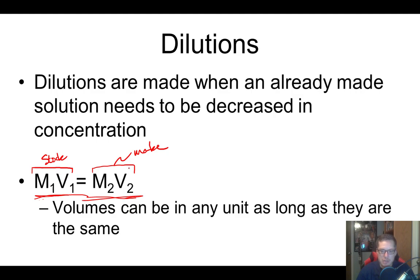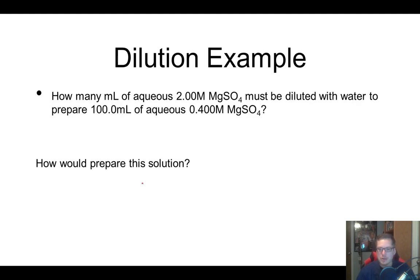Your M's are your concentrations and molarities, and your volumes are V's. Your volume really can be in any unit, you just got to make sure it's the same on both sides. If one of them is liters, the other one needs to be in liters, or milliliters, milliliters. Let's do some practice problems. It says how many milliliters of aqueous 2 molar magnesium sulfate must be diluted with water to prepare 100 milliliters of aqueous 0.4 molar magnesium sulfate.